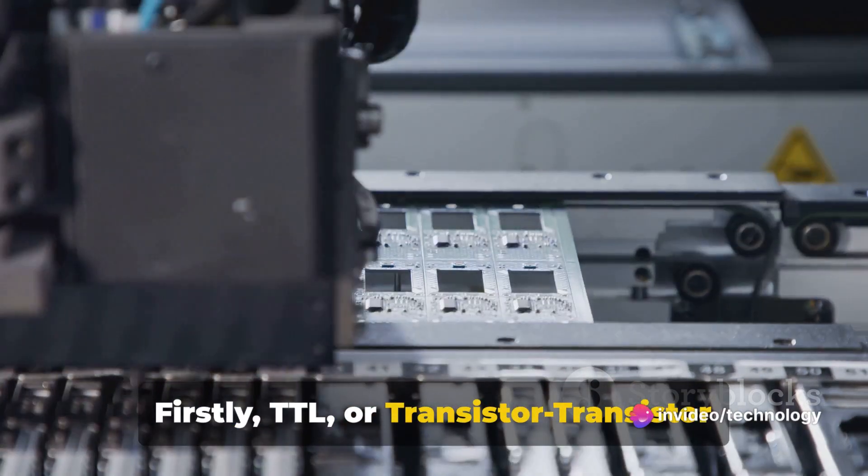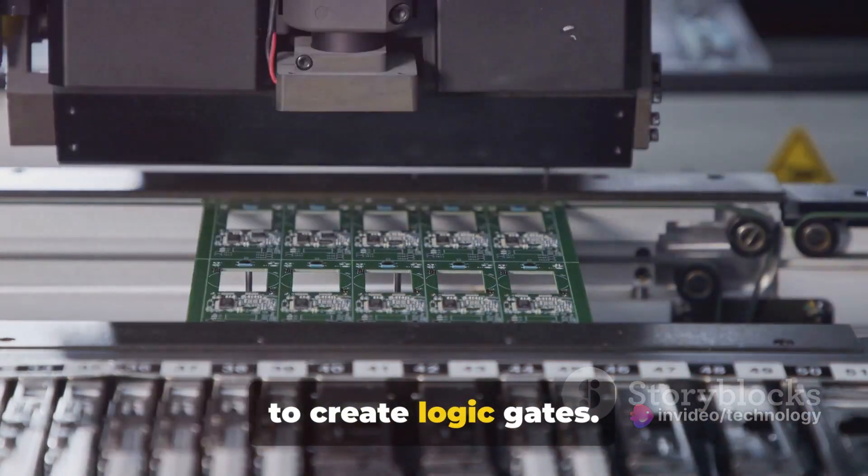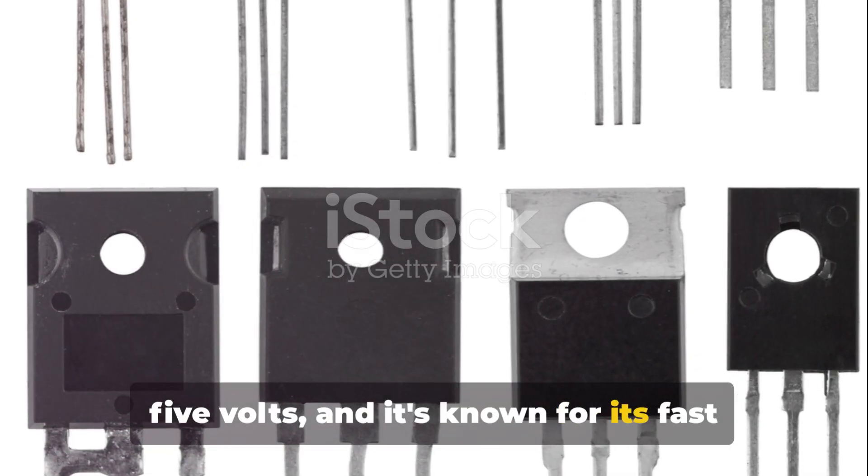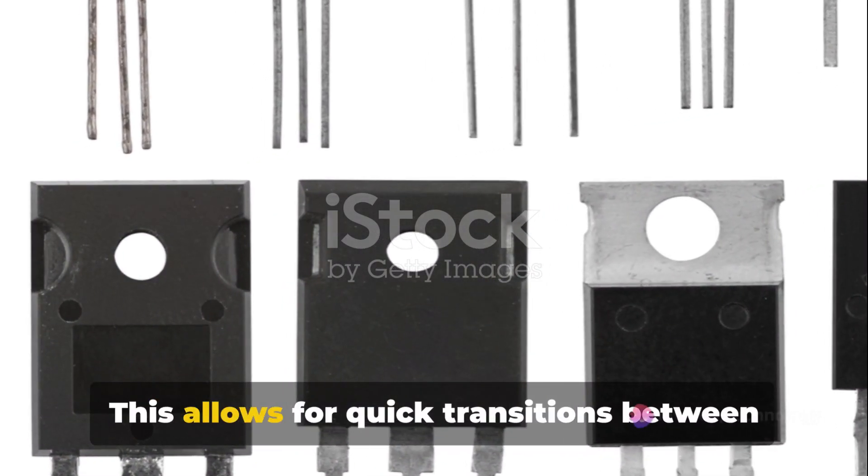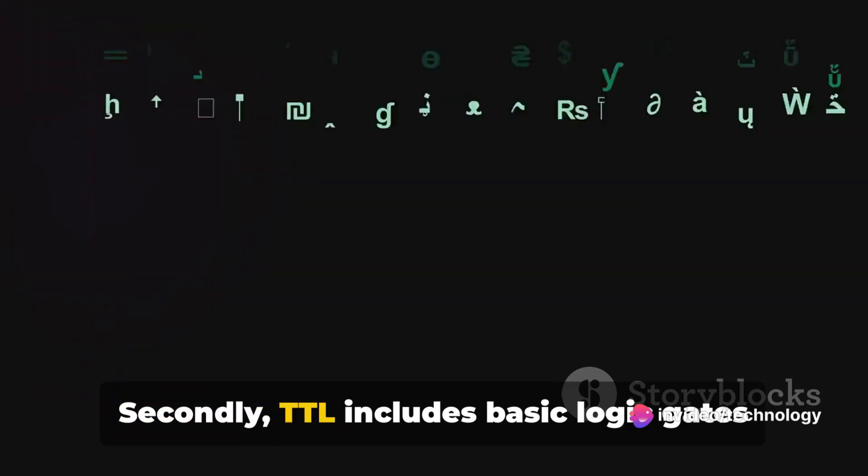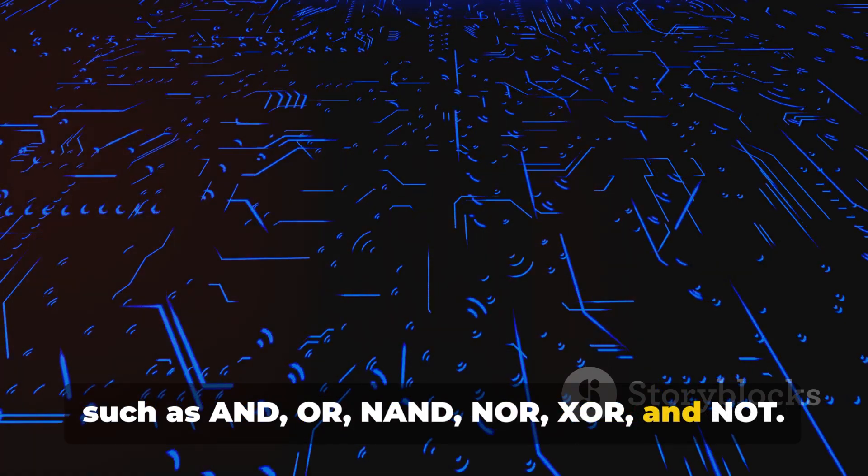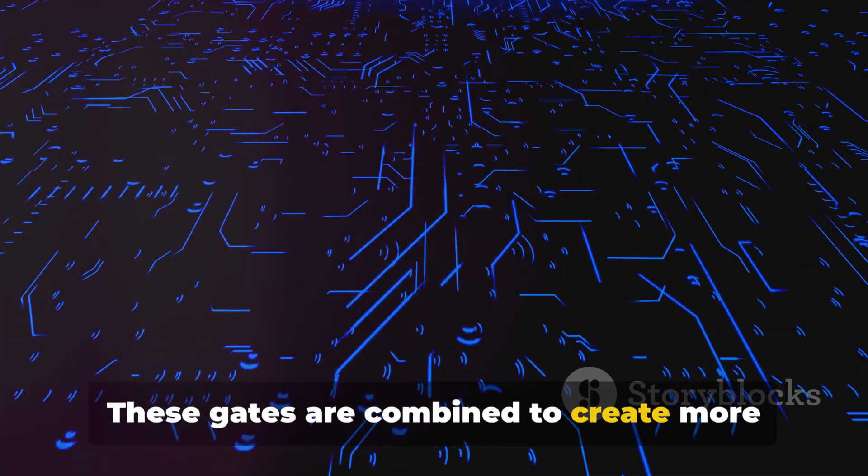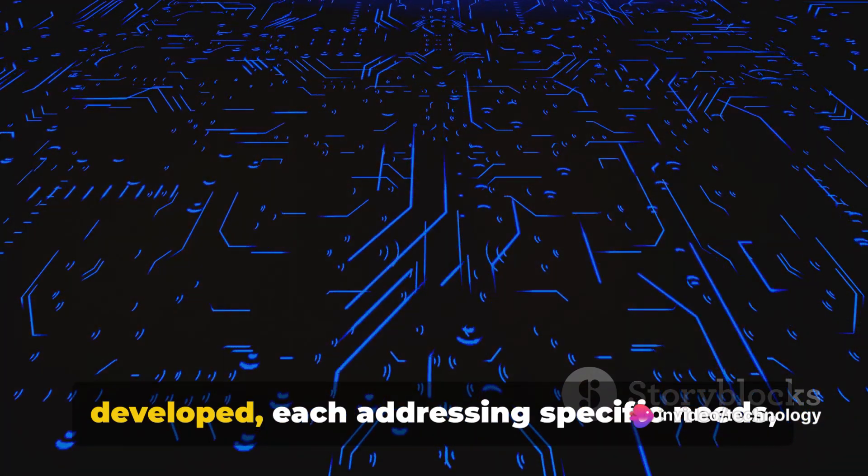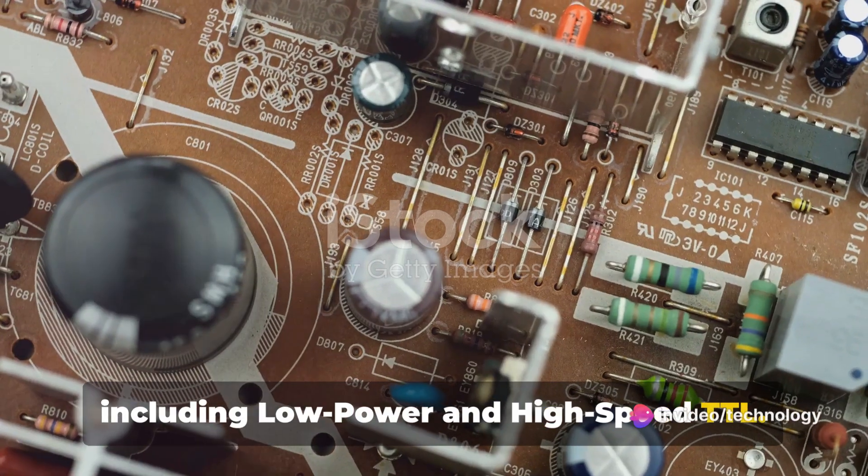Firstly, TTL, or transistor-transistor logic, uses bipolar junction transistors to create logic gates. It works with a power supply voltage of 5 volts, and it's known for its fast switching speed. This allows for quick transitions between logic states. Secondly, TTL includes basic logic gates such as AND, OR, NAND, NOR, XOR, and NOT. These gates are combined to create more complex digital circuits. Over time, variants of TTL have been developed, each addressing specific needs, including low-power and high-speed TTL.